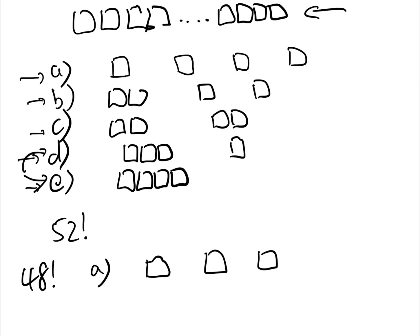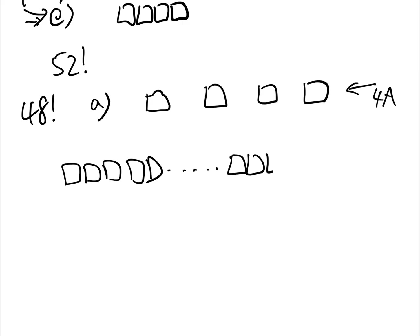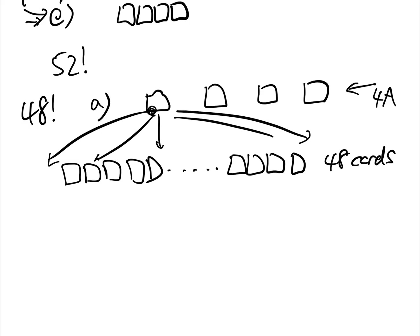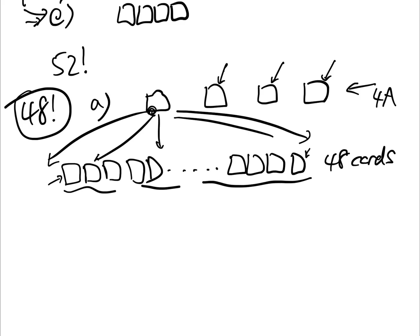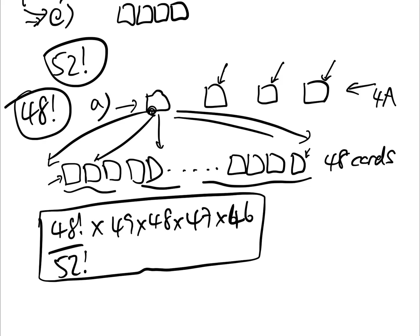Looking at case A — four aces separate: the first ace has 49 places it can go, including in front of the first card or behind the last card. The second therefore has 48 places, the third has 47, and the fourth has 46. The 48 other cards have 48 factorial possibilities of being arranged, and the entire sample space is 52 factorial. Therefore the probability that the four aces are separate equals 48 factorial over 52 factorial times 49 times 48 times 47 times 46.